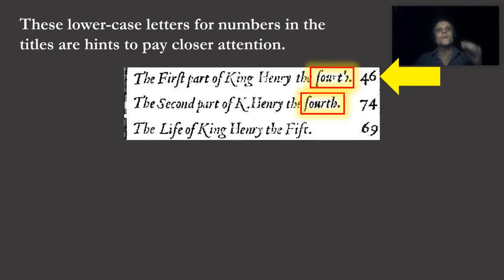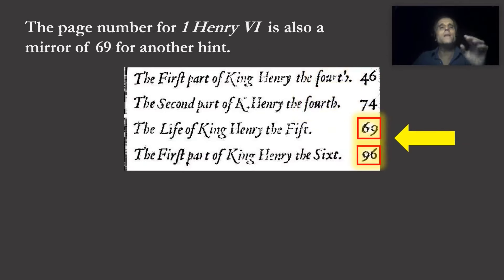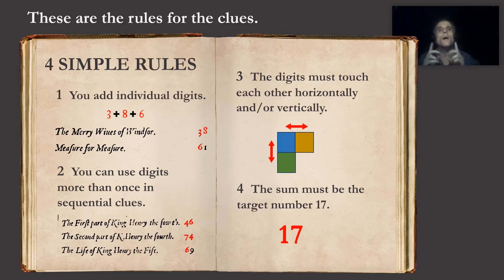The lowercase letters for numbers in the titles for the Henry IV plays are hints to pay closer attention — they are the only numbers in the section set in lowercase. The page number for the first part of Henry VI is also a mirror of 69 as another hint; it was the first anomaly I looked at on the page which prompted me to investigate further. These are the rules for the clues, reverse engineered from what we have already done. Rule 1: you add individual digits. Merry Wives begins on page 38 while Measure for Measure begins on page 61: 3 plus 8 is 11, 11 plus 6 is 17.